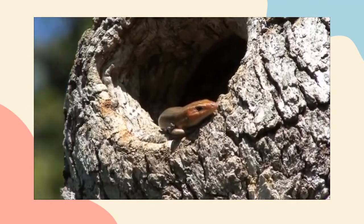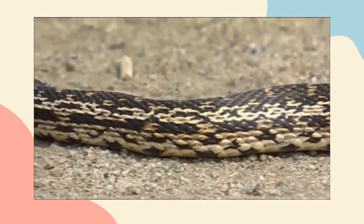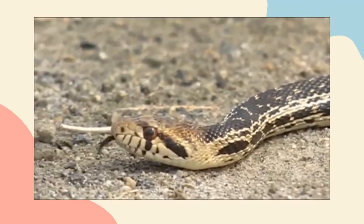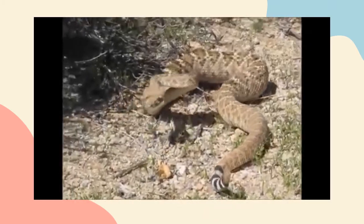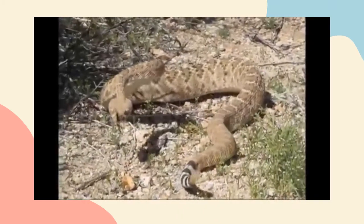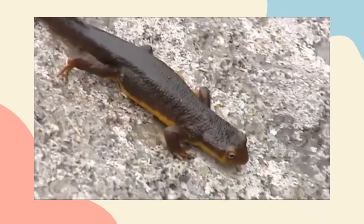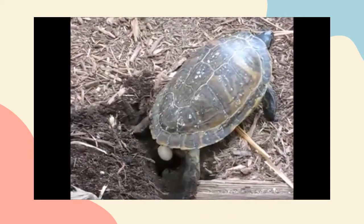Their skin is one good way to tell if the animal you are looking at is a reptile or an amphibian. Reptiles' scaly skin is dry and watertight. It may be rough or smooth, dull or shiny, but never slimy. If you see an animal that looks like a snake or a lizard but it has wet or slimy skin, you're probably looking at an amphibian instead of a reptile.